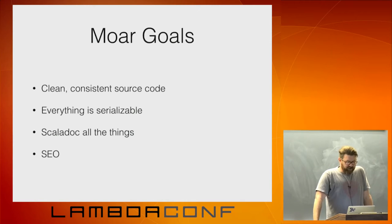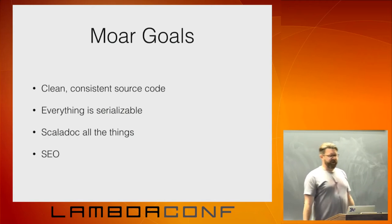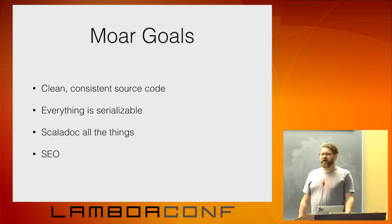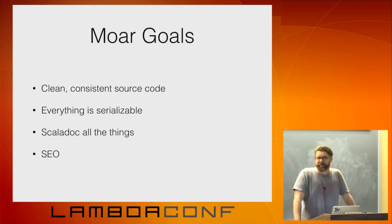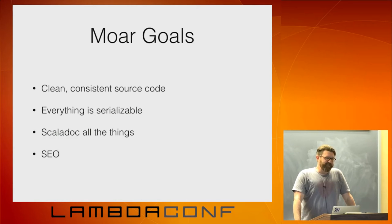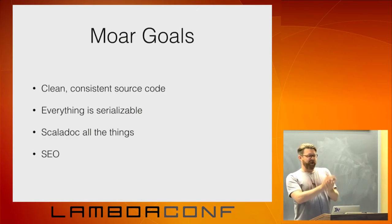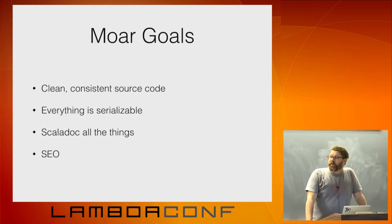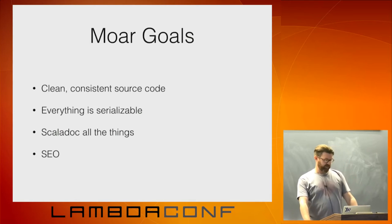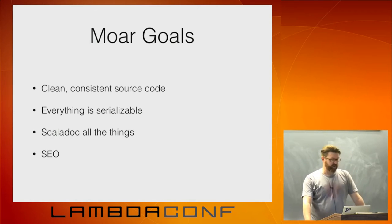I'll throw a commit in there and then Travis will tell me it's no good because there's trailing whitespace somewhere. Another goal is that we are trying as much as possible to make everything serializable — Java serializable. You're probably wondering why we care about that. The answer is Spark. Anytime you're doing Spark and you have code which might be shipped off to some slave node, they use Java serialization. A lot of us who are using this stuff are ending up writing code that's going to end up in Spark at some point.